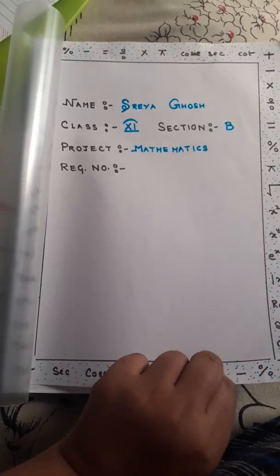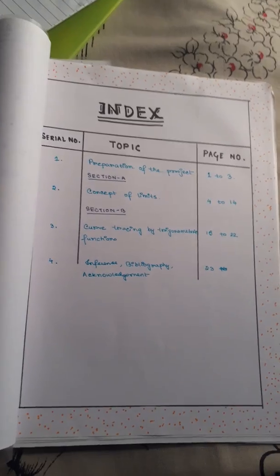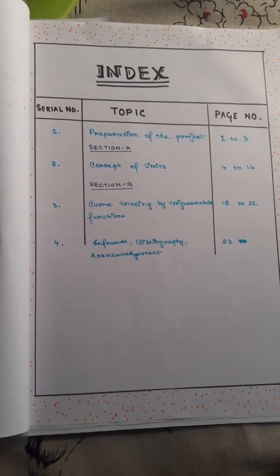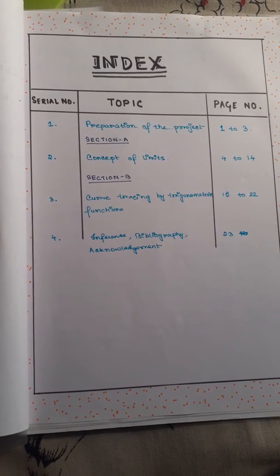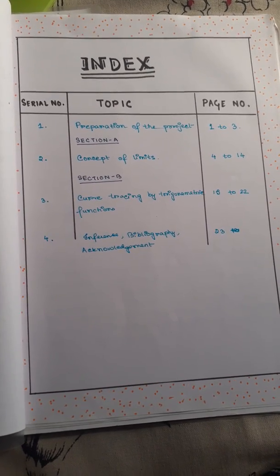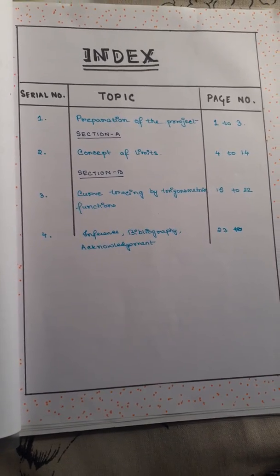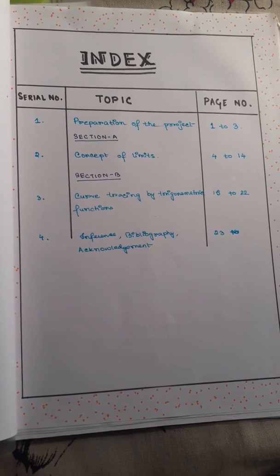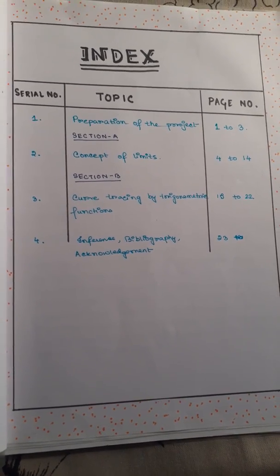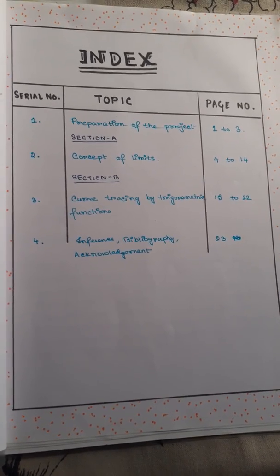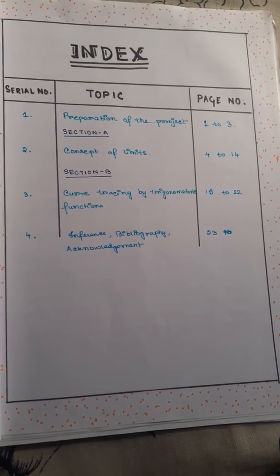Now if we proceed to the next page, we will find that there is the index, where I have drawn a chart for serial number, topic, and page number. My topics are preparation of the project, and in section A I have done the concept of limits, and for section B I have done curve tracing by trigonometric functions. At last, I have given the inference, bibliography, and acknowledgement.